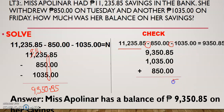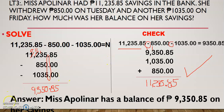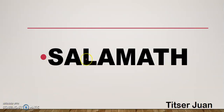So 9,350.85 plus 1,035 plus 850 — let us check if it is equal to 11,235.85. Remember, the decimal point should be perfectly lined up. Adding: 5, 8, bring down the decimal point, 5, and this is 3 — carry 1. 1 plus 3 is 2, carry 1 again. And this is 11. So the answer is 11,235.85, which is equal to the original. You are now sure that your answer is correct. That's all. Sana may natutunan kayo. Don't forget to subscribe.